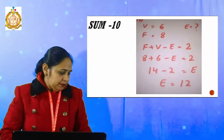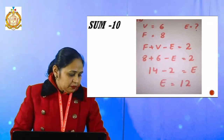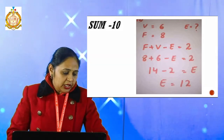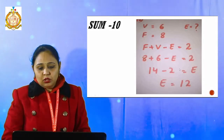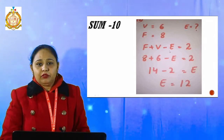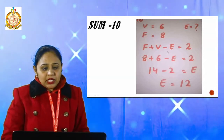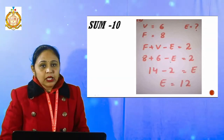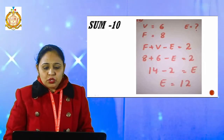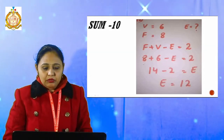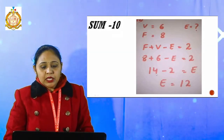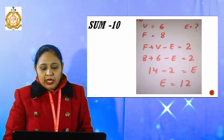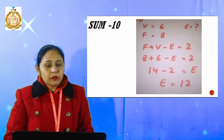Then in sum number ten, vertices are given as six and faces are given as eight. We want to find the edges. Since edges have a negative value in the formula, I move them to the other side to make them positive: 8 + 6 = 14, then 14 − 2 = 12. So the edges are 12.